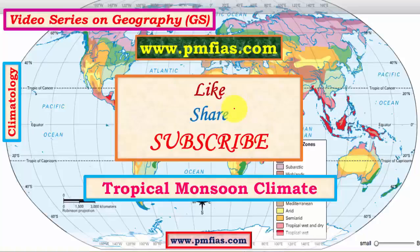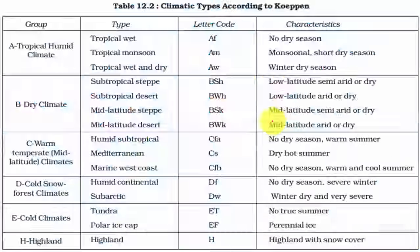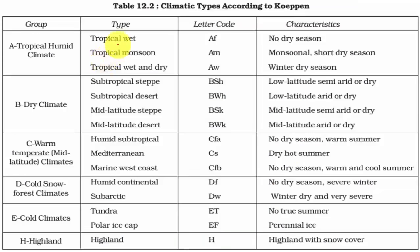Hello friends. In this video we will study about tropical monsoon type of climate. In the previous videos I have explained about equatorial rainforests and tropical savannah type of climate. Tropical savannahs are grasslands within the tropics. Under the humid tropical climates there are three important types: tropical wet, also called equatorial rainforest climate; tropical monsoon type of climate, which we will discuss in this video; and tropical wet and dry climate, which is savannah type of climate — a grassland type confined to tropical regions.